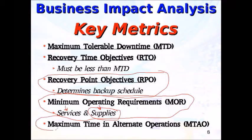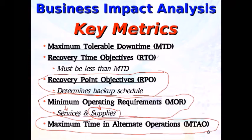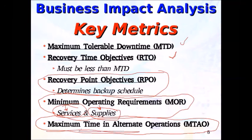Another often overlooked metric is maximum time in alternate operations. For example, if you get a flat tire and can afford to be off the road for up to an hour, and it takes five minutes to pull over, you have 50 minutes to change the tire. The donut spare can do 55 miles per hour — it's not the same service level as a normal tire, but it gets you out of the problem. You can't drive on a donut forever. You are not out of the emergency until you have returned to normal operations.